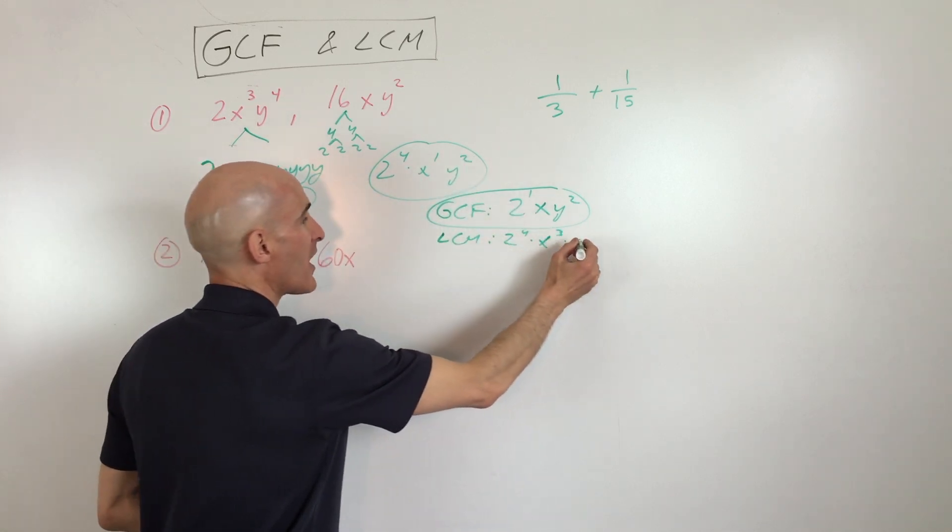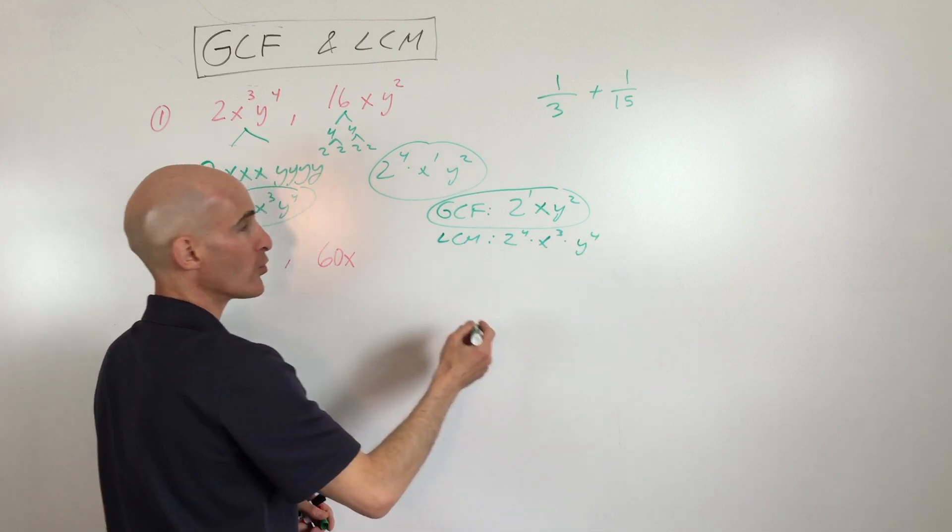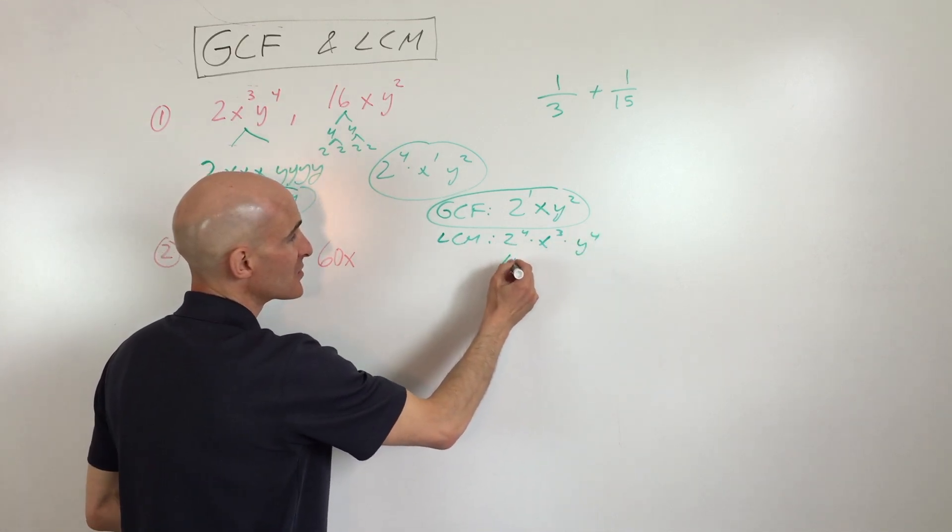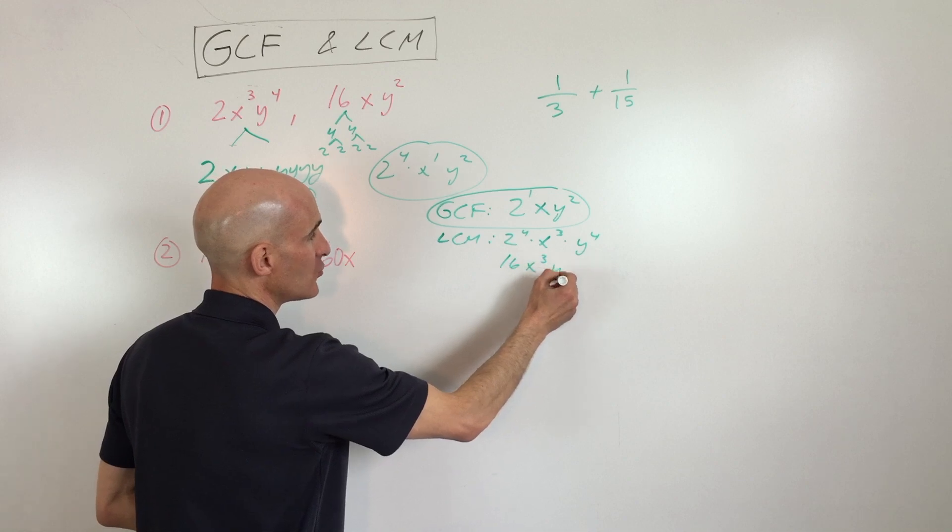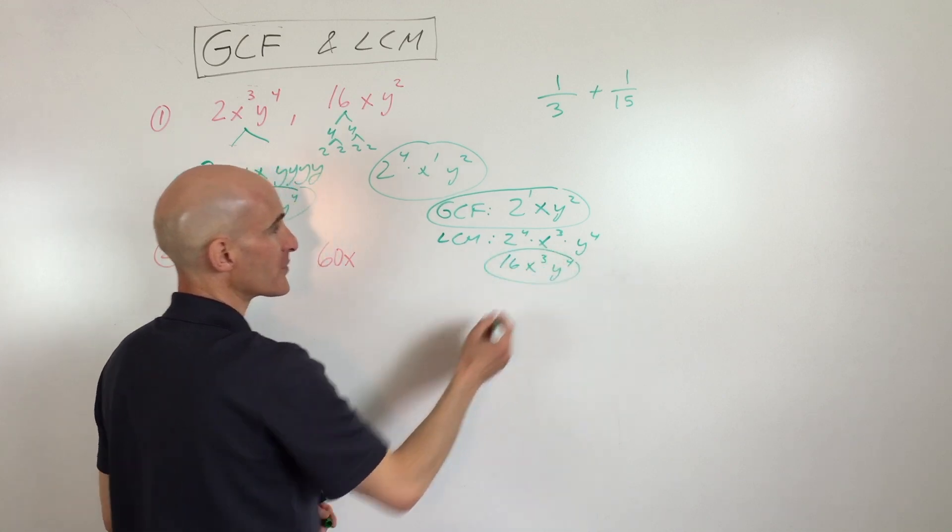And we have 4 y's and 2 y's. We're going to need the one that occurs the most. Now you can go ahead and simplify this. This is going to be 16x³y⁴.